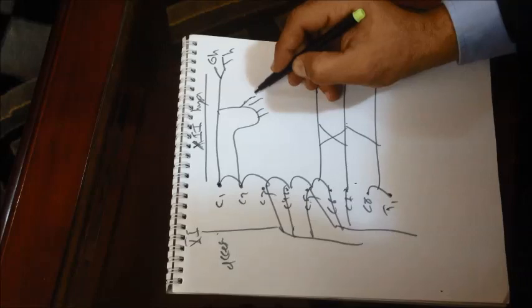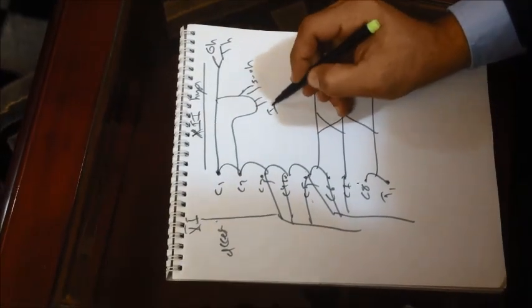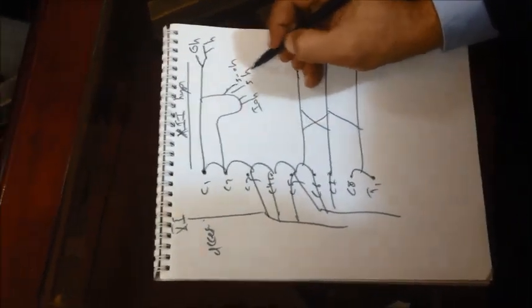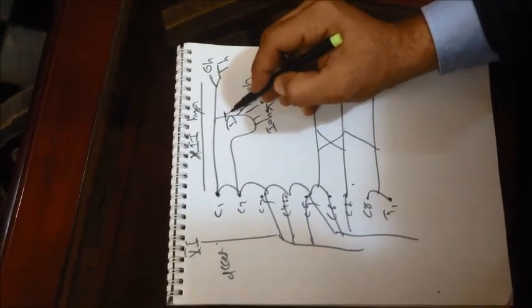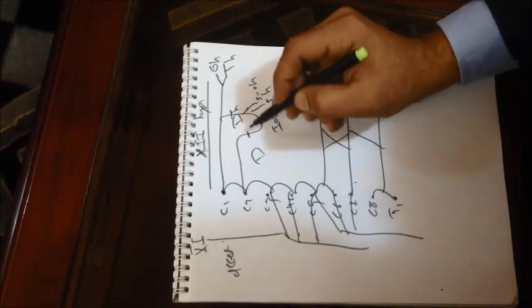We have superior omohyoid, inferior omohyoid, sternohyoid, sternothyroid. Here this is named descending hypoglossal and here descending cervical.